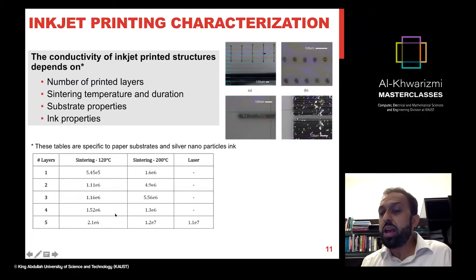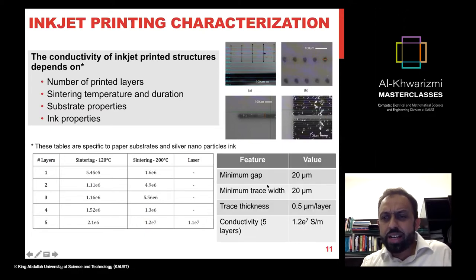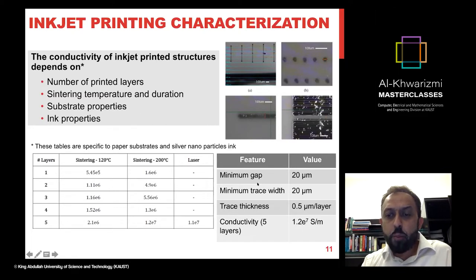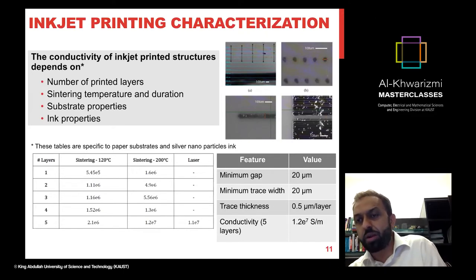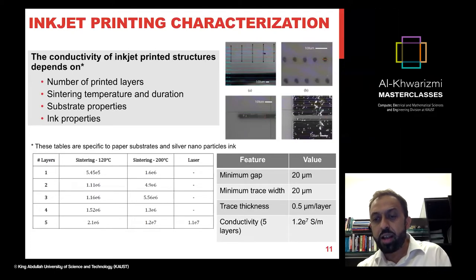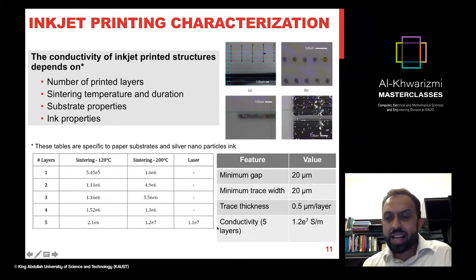For high-frequency electronics, conductor thickness is important because of skin depth losses. With the standard Dimatix printer, we can achieve about 20-micron feature sizes, and each printed layer gives about 0.5 microns thickness. So to get 3 microns of conductor thickness, you print six layers. Conductivity per layer is around 1.2×10⁷ S/m, which is good for nanoparticle-based printing. There are now new printers that can go down to 1 micron resolution.